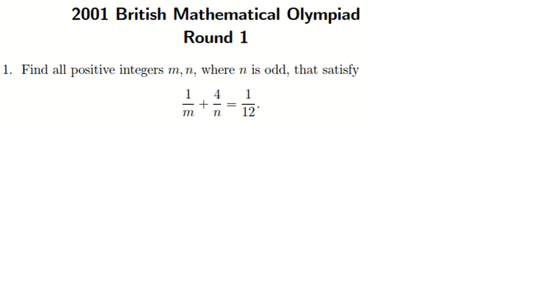In this video, we are going to solve problem 1 of BMO 1. It says find all positive integers m and n where n is odd that satisfy 1/m + 4/n = 1/12.